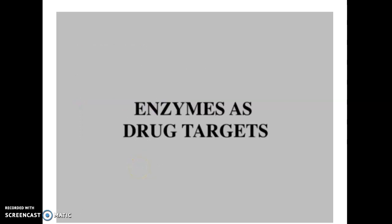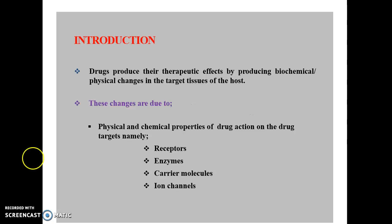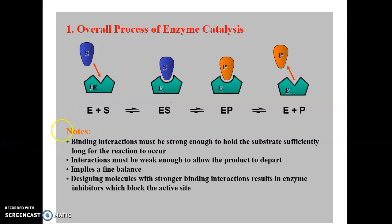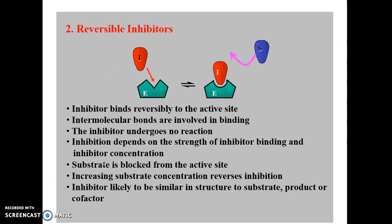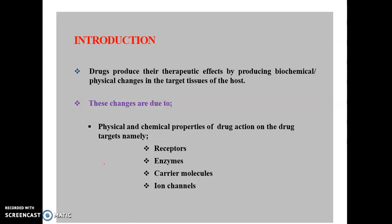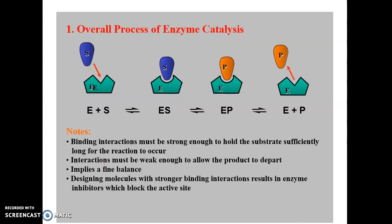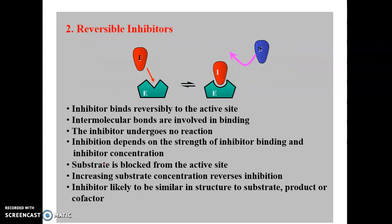Welcome to another video tutorial — the second part on enzymes as drug targets. We already discussed the basic aspects of drug targets, what a drug molecule is, and how it produces therapeutic action by binding with a target site. The targets include receptors, enzymes, carrier molecules, and ion channels. Now we move on to enzyme catalysis and how a drug binds with the active site.